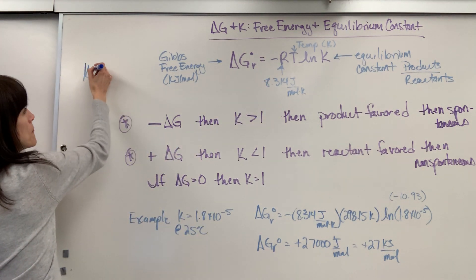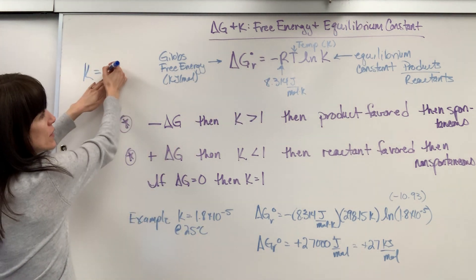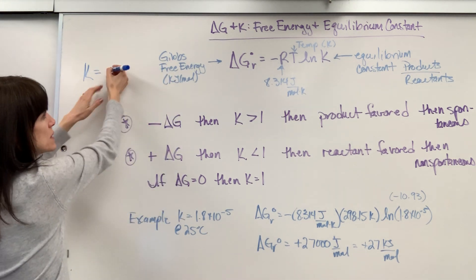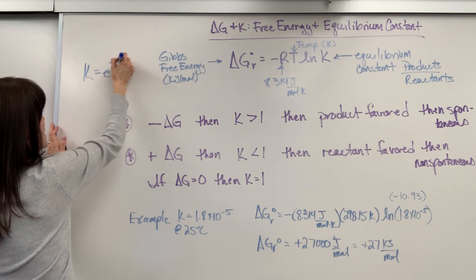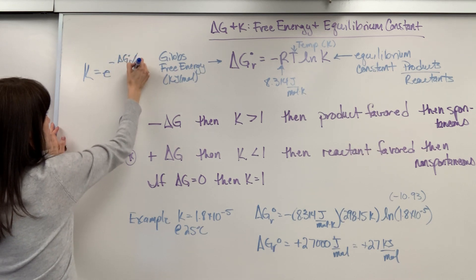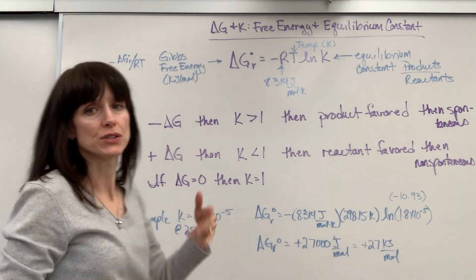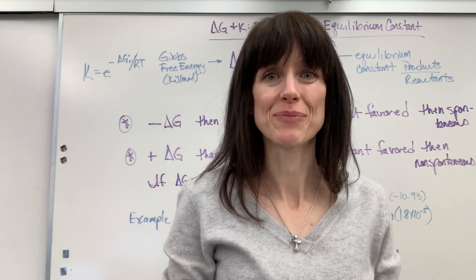So you're going to have K equals E raised to the negative delta G divided by RT, if you have to do that backwards. Just a reminder on the math.